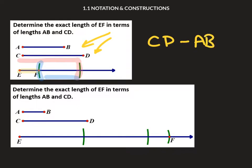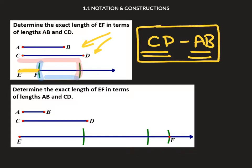So to me, if I was describing E to F, it looks like I made a CD and then I subtracted an AB. This would be the exact value of EF.